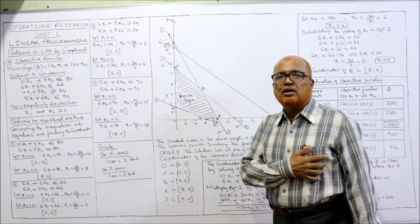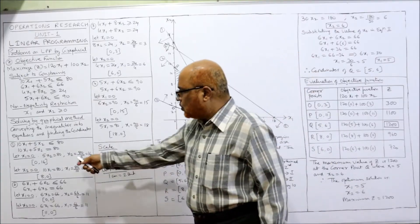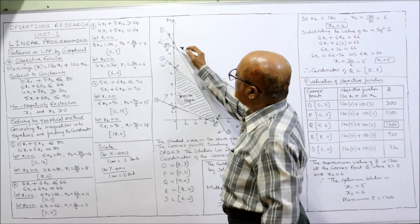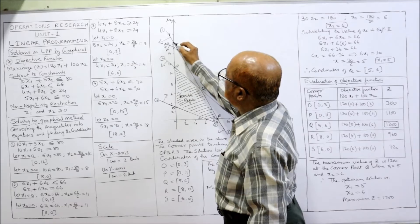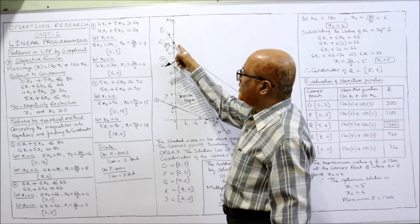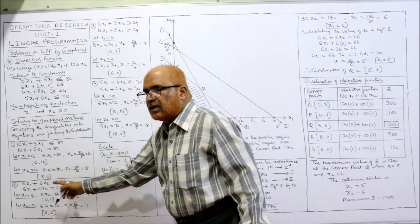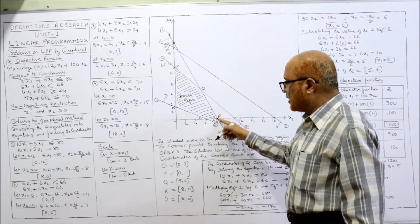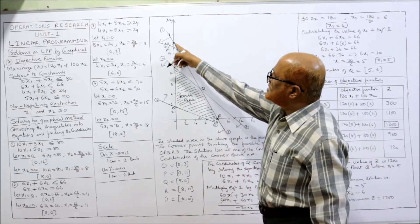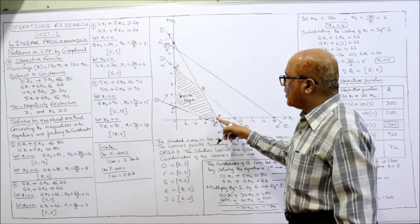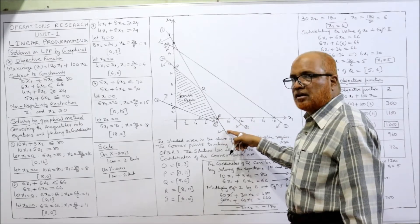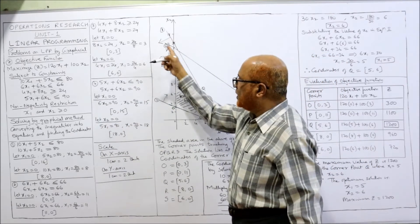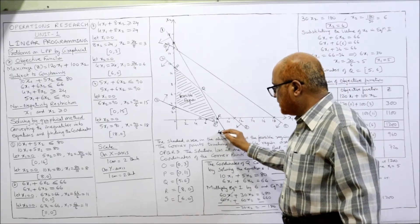Now we draw the coordinates. The first equation coordinates are (0, 16) and (8, 0). When x1 is 0, x2 is 16 — put a mark at 16 on the y-axis and label it as first. When x1 is 8, x2 is 0 — put a mark at 8 on the x-axis. Join these two points by a straight line and extend it. This is the first equation, labeled 1. Since it is a less-than-or-equal-to constraint, draw a downward arrow towards the origin.